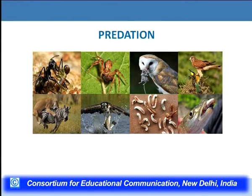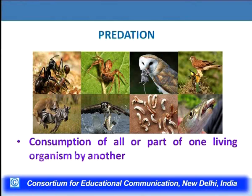Coming to predation — what exactly is predation? It is basically the eating of an individual by another individual. The individual which is getting killed or eaten is known as prey, and the individual which kills or eats another individual is known as predator. These predator-prey relationships span from invertebrates to the highest vertebrates — from insects and arthropods to humans. The predator will consume a part or all of another living organism, and we term this interaction as predation.